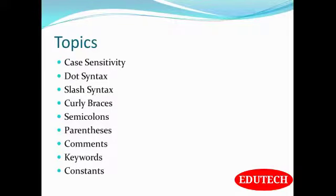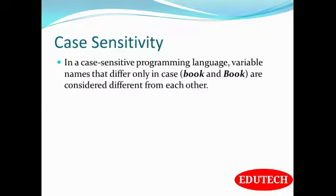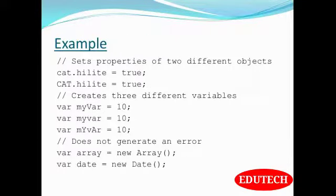Topics covered in this tutorial include: case sensitivity, dot syntax, slash syntax, curly braces, semicolons, parentheses, comments, keywords, and constants. Case sensitivity: in a case-sensitive programming language, variable names that differ only in case are considered different from each other. For example, 'book' and 'Book' are different. Similarly, 'cat' written in lowercase and 'Cat' written with a capital letter are different objects.